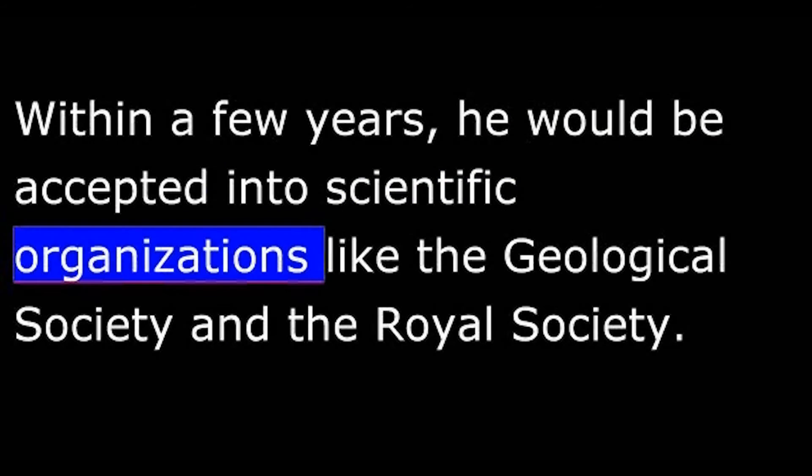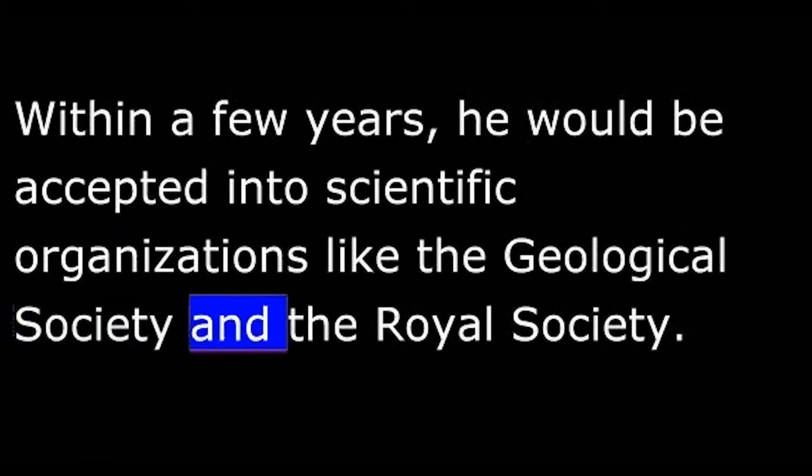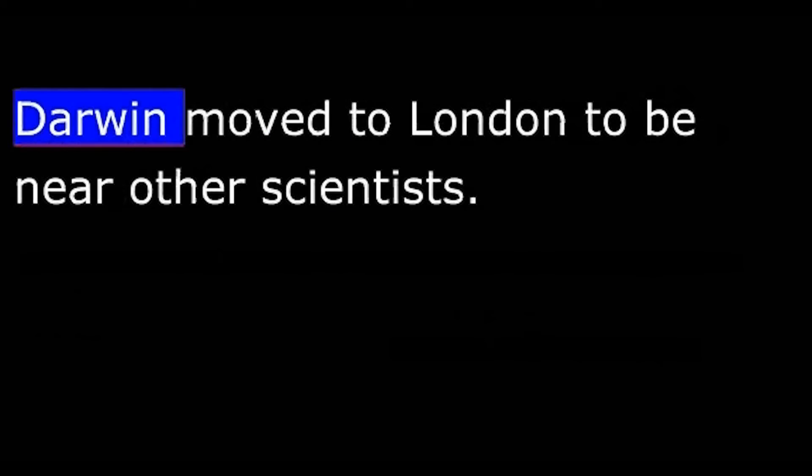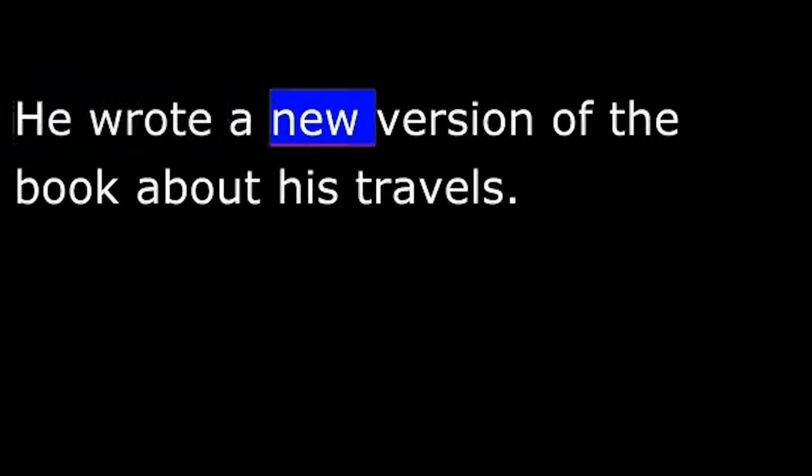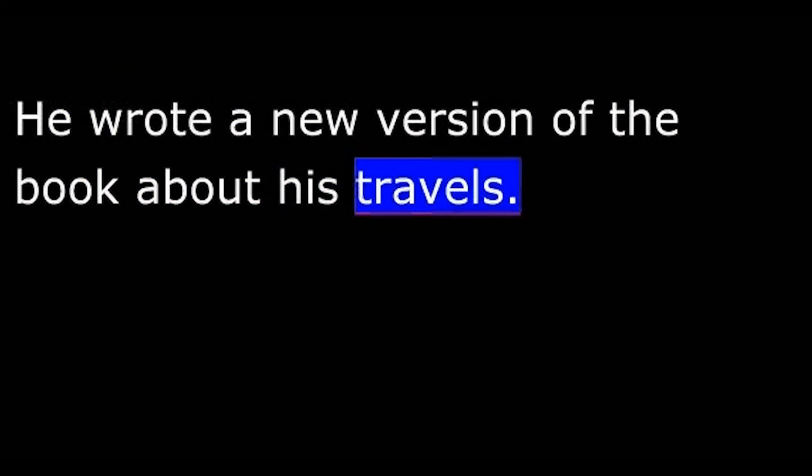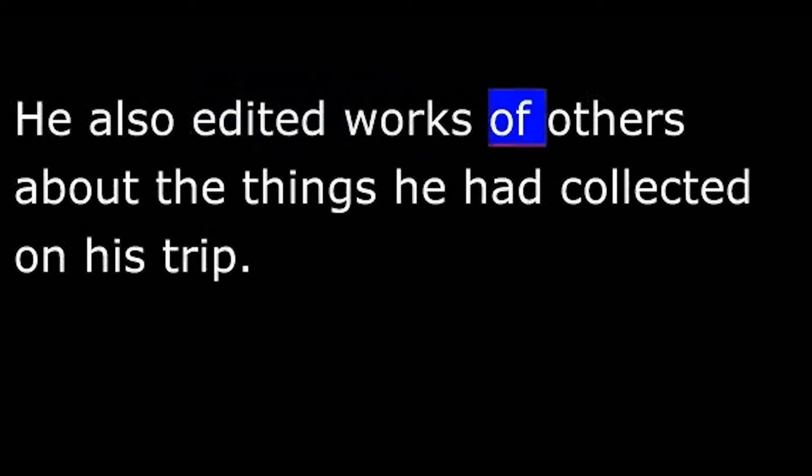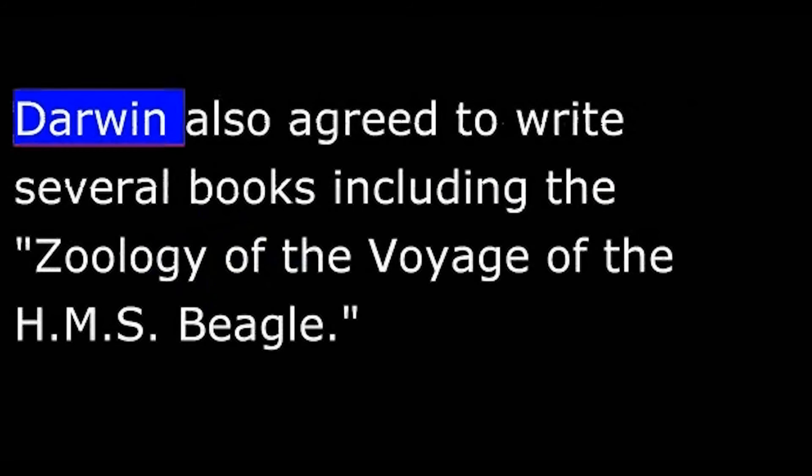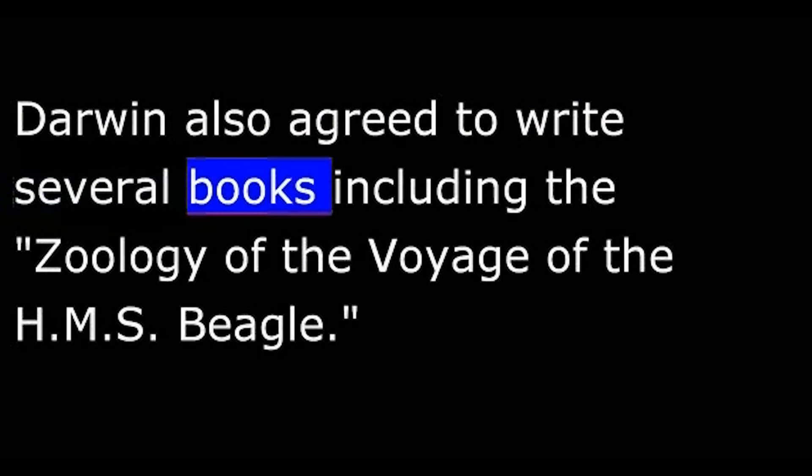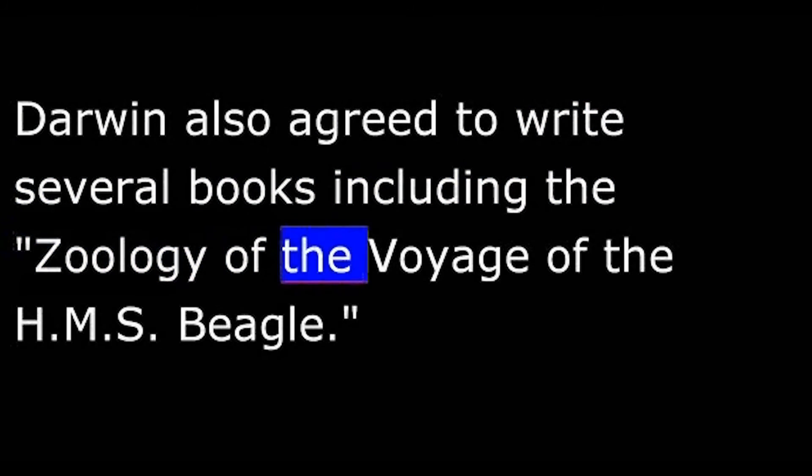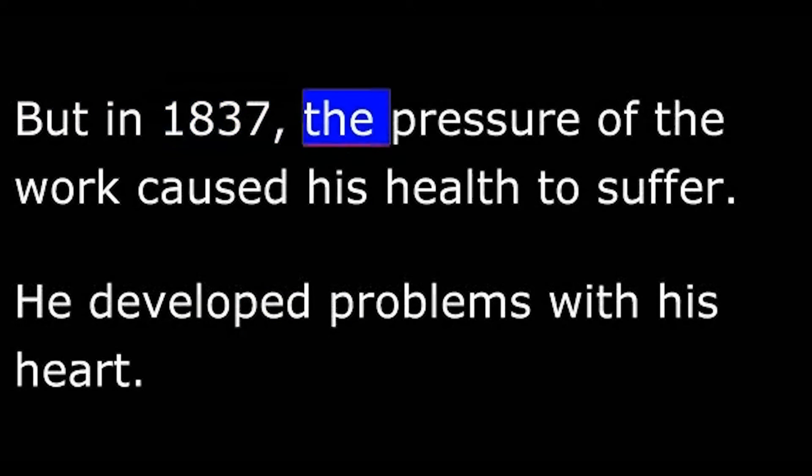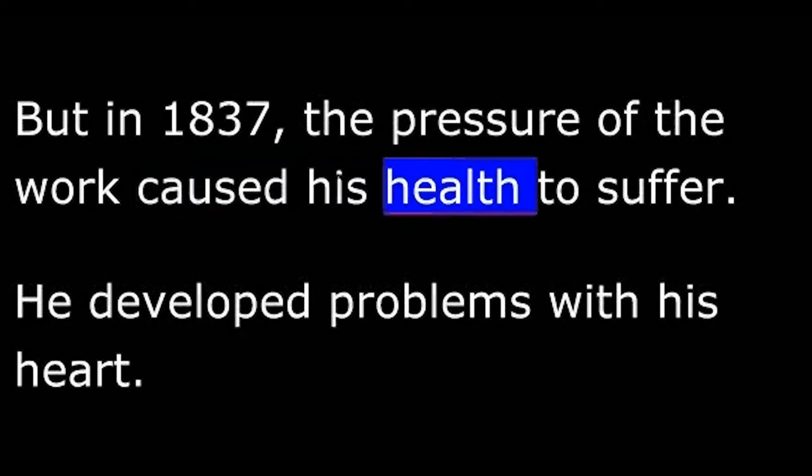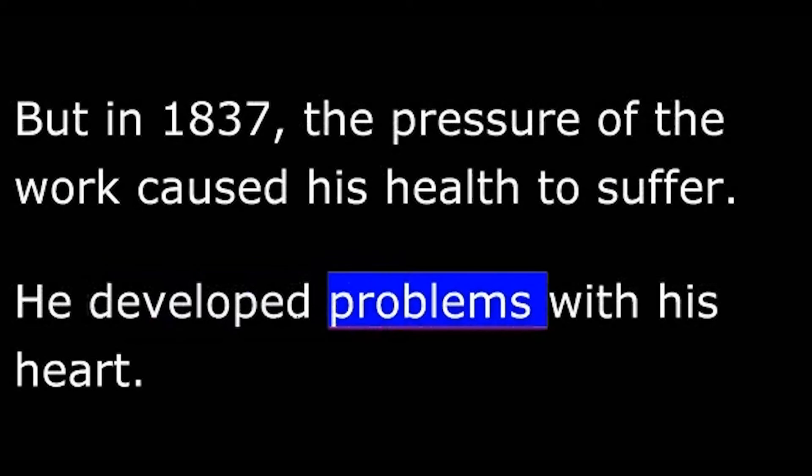Darwin moved to London to be near other scientists. He wrote a new version of the book about his travels. He also edited works of others about the things he had collected on his trip. Darwin also agreed to write several books, including The Zoology of the Voyage of the HMS Beagle. But in 1837, the pressure of the work caused his health to suffer. He developed problems with his heart.